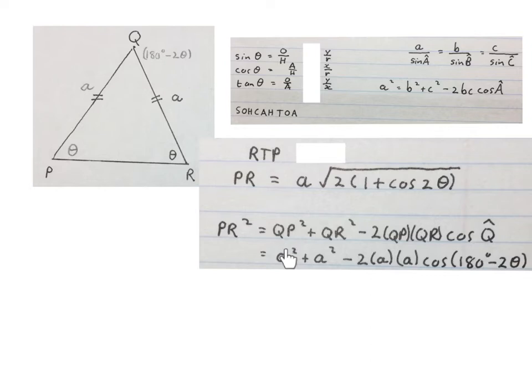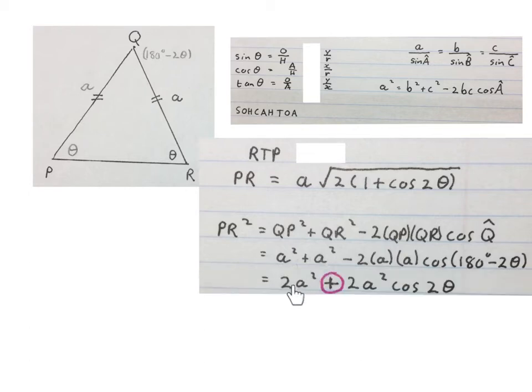Then you fill in QP's length is A, QR's length is A, A and A again and then cos 180 minus 2 theta from up there. If you simplify this, A square plus A square is 2A square. Now that 180 minus 2 theta with cos forces us into the second quadrant, makes this change the sign of the cos. So that becomes a plus 2 times A times A is 2A square cos 2 theta. We reduced.